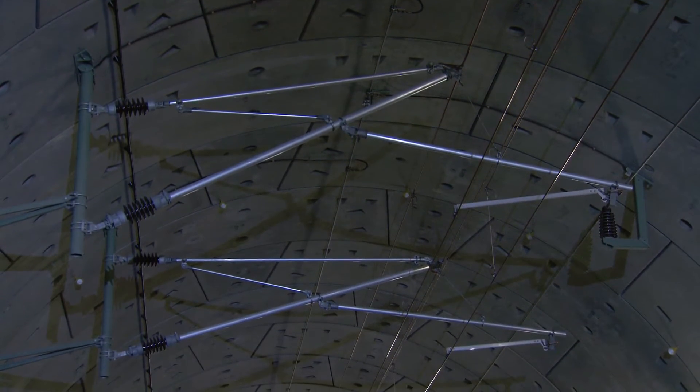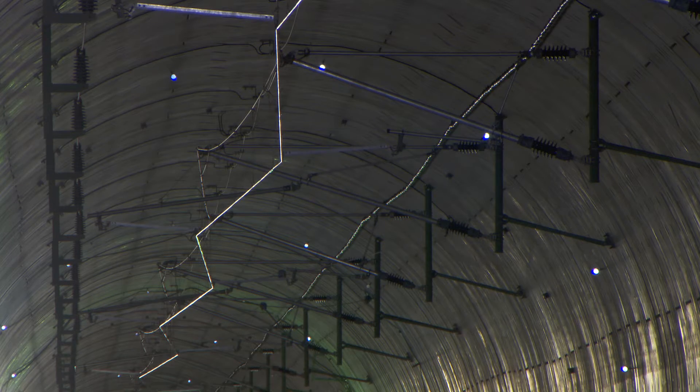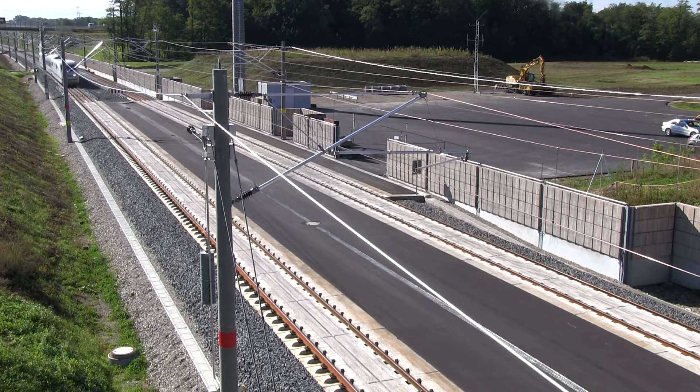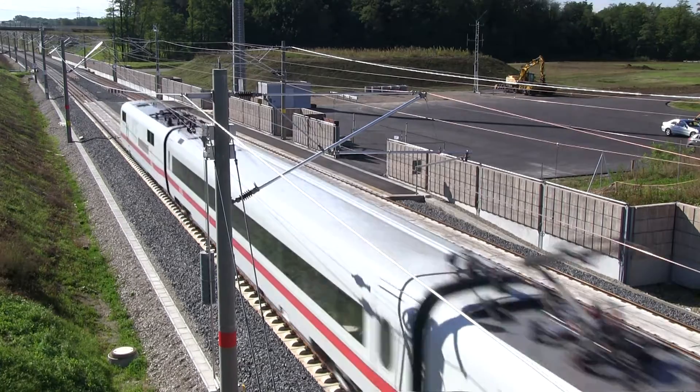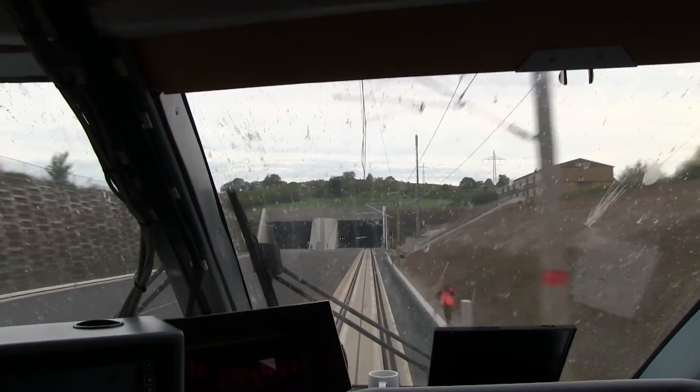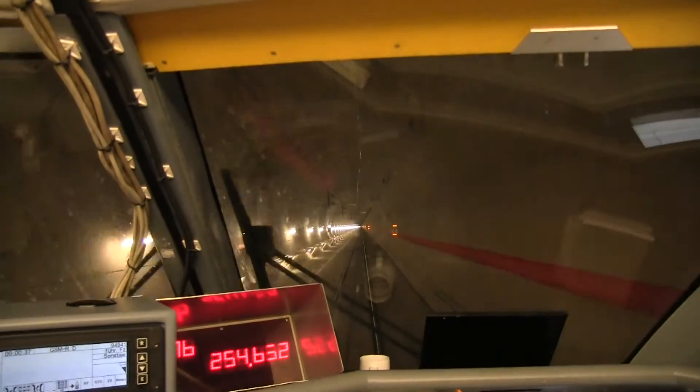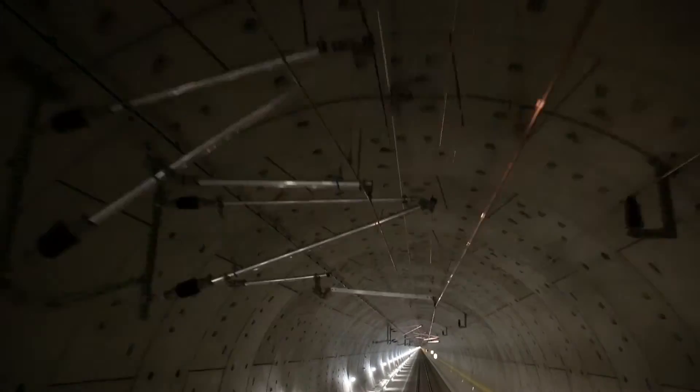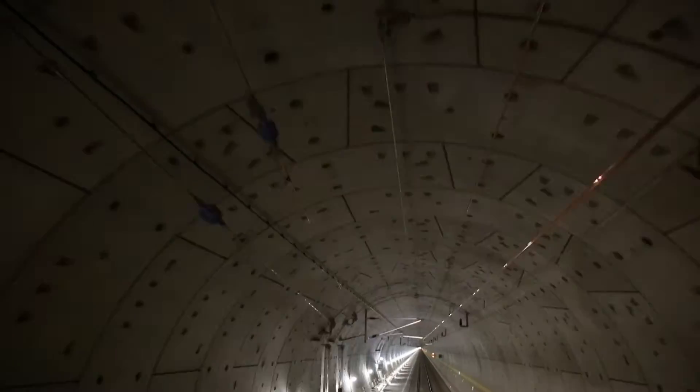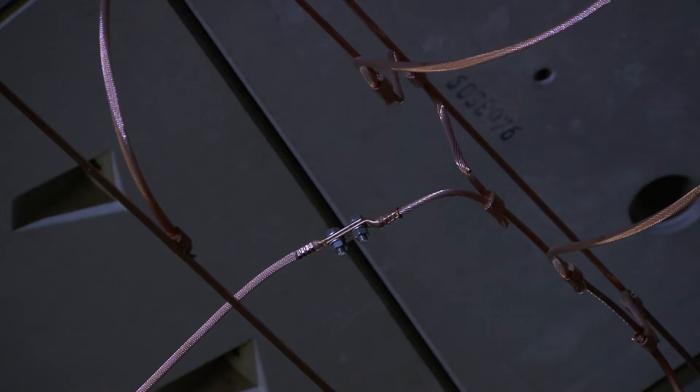The overhead contact line is now in position and ready for the first tests. In operation, trains can pass through the tunnel in 2 minutes and 15 seconds when travelling the 9.4 km distance at 250 km per hour. There are reserves too. All the overhead contact line systems have been tested and approved for a maximum of 330 km per hour.